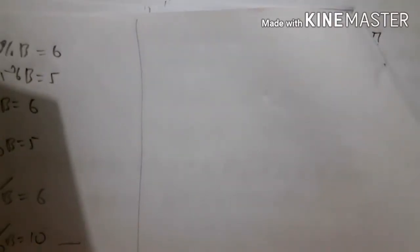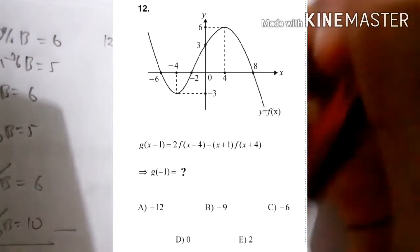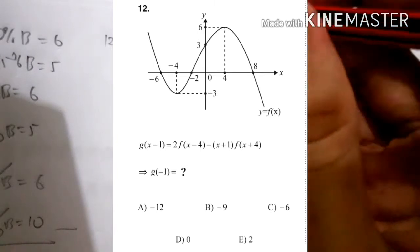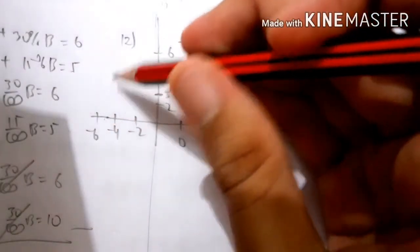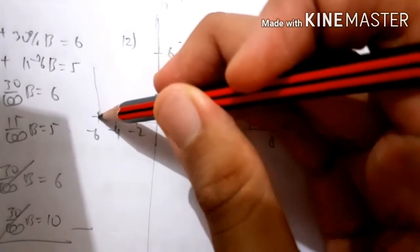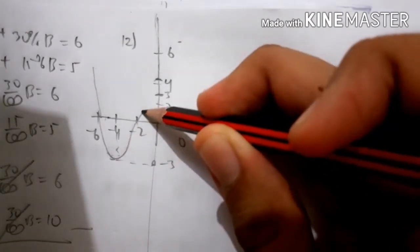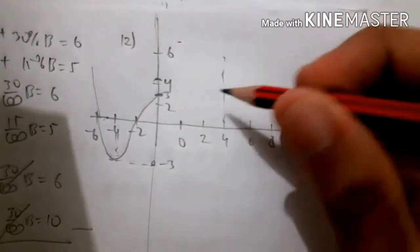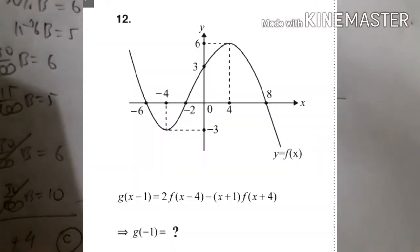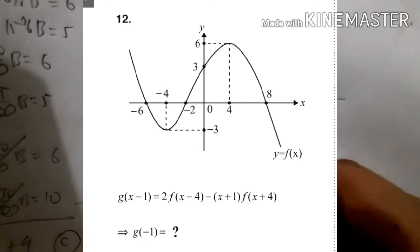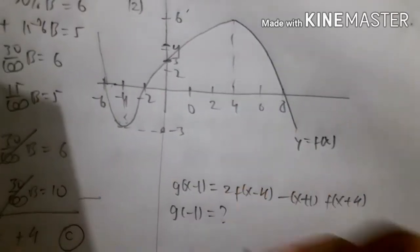That is number 11. For number 12, there is a graph showing the function y equals f(x), with a line going from there. From that graph we are asked about g(x minus 1) equals 2·f(x minus 4) minus (x plus 1)·f(x plus 4) — what is g of minus 1?